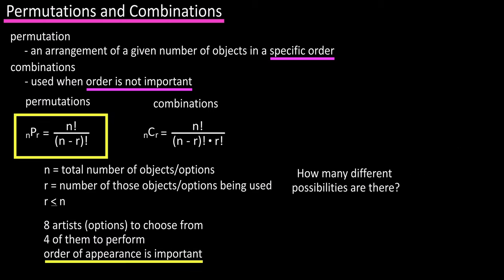We're going to use the permutation formula because the order of appearance is important. Our n value is 8, because we have eight different options or artists to choose from, and our r value is 4, because that is how many of the options or artists we need to perform.